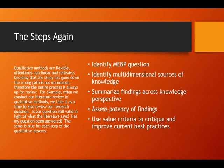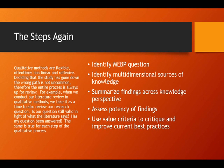Let's take a quick look at the steps of multi-dimensional evidence-based practice. First of all, we identify the question, identify the sources of knowledge — multi-dimensional sources of knowledge — summarize the findings across these knowledge perspectives, assess the potency of these findings, and then use value criteria to critique and improve upon current best practices.